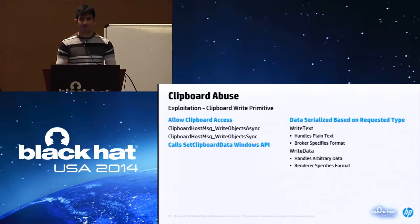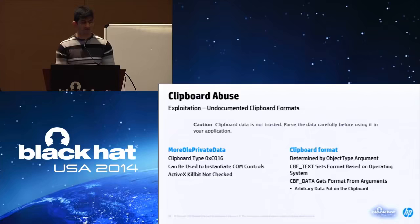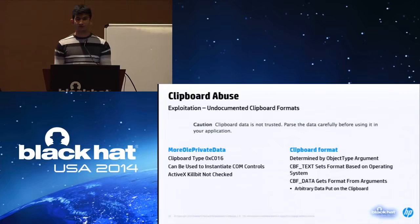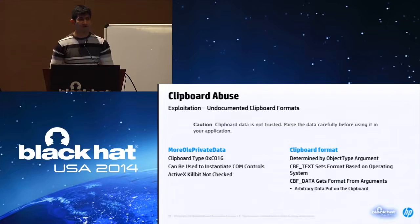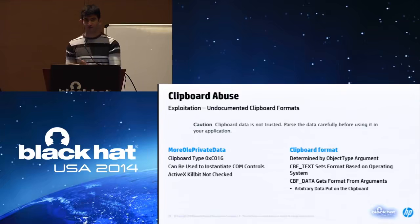However, if the renderer requests arbitrary data to be put on the clipboard, the renderer has control over the clipboard format — and that's the entire bug. Microsoft explicitly states that clipboard data is not to be trusted and should be parsed very carefully. A huge reason for this is clipboard type 0xC016, an undocumented clipboard type registered by Microsoft. In the atom table it's known as 'more OLE private data' and this can be used to instantiate arbitrary COM controls, which is exactly what you saw when we were right-clicking on the desktop.